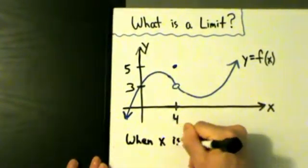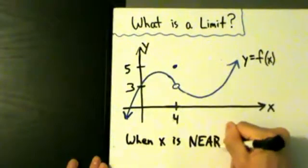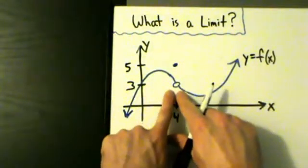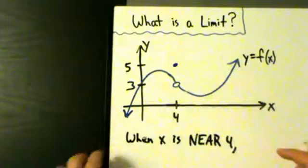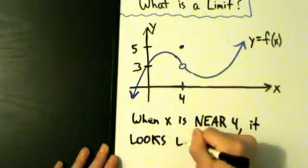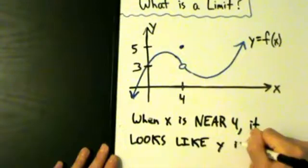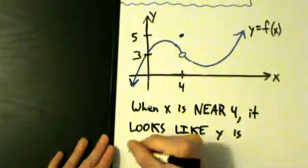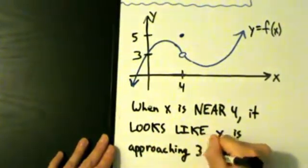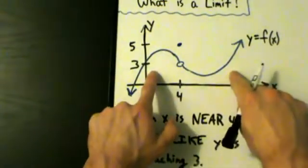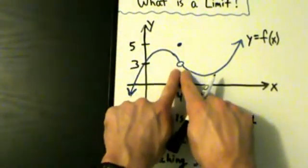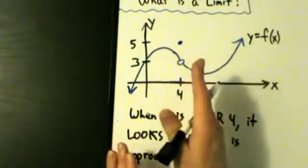So when x is near 4, what does it look like y is doing? Well, if we follow along the curve from either side, as x gets closer and closer to 4, it looks like y is going to hit 3. So when x is near 4, it looks like y is approaching 3. If we follow along the curve from either the left or the right, as x gets closer and closer to 4, y is getting closer and closer to 3 on the blue curve. Now, y actually hits 5 when x is 4, but that doesn't matter for the limit.